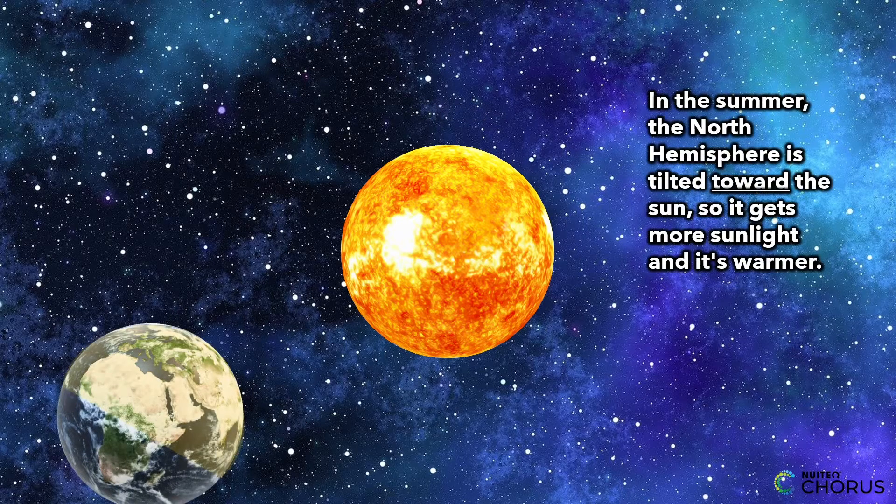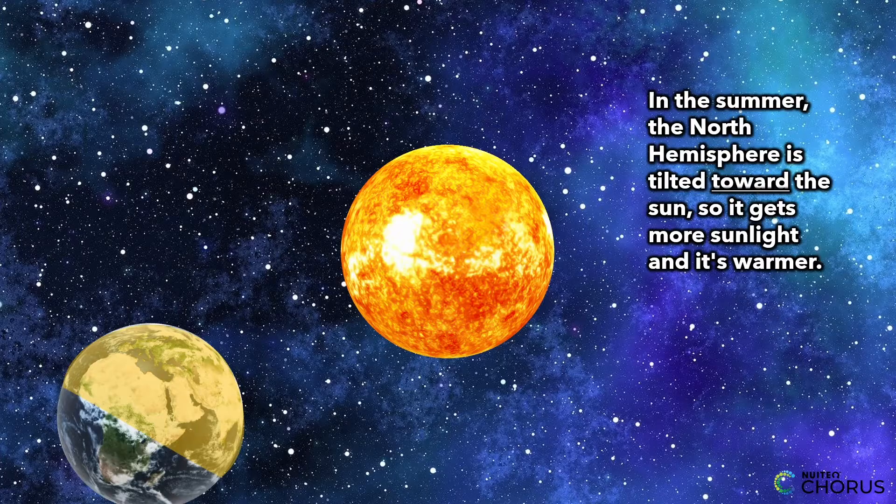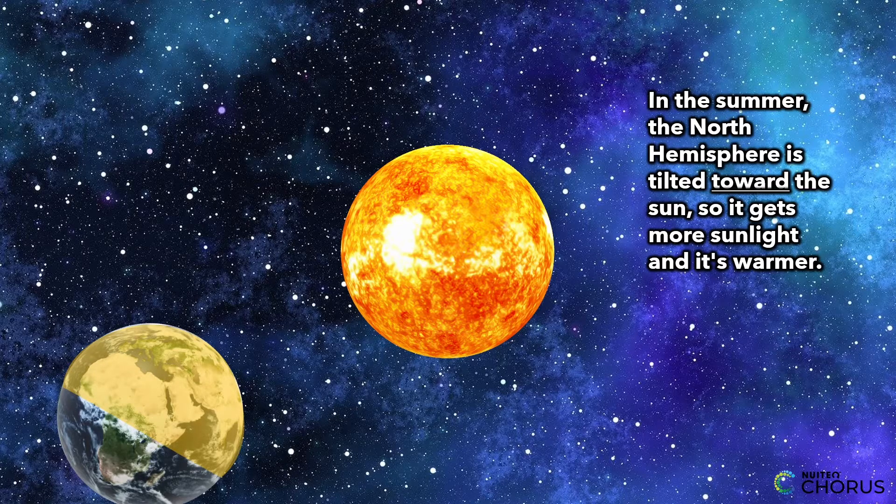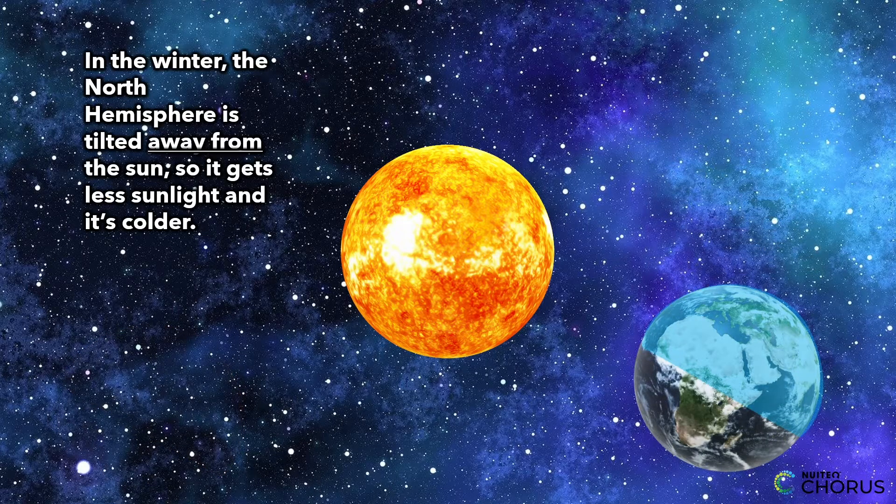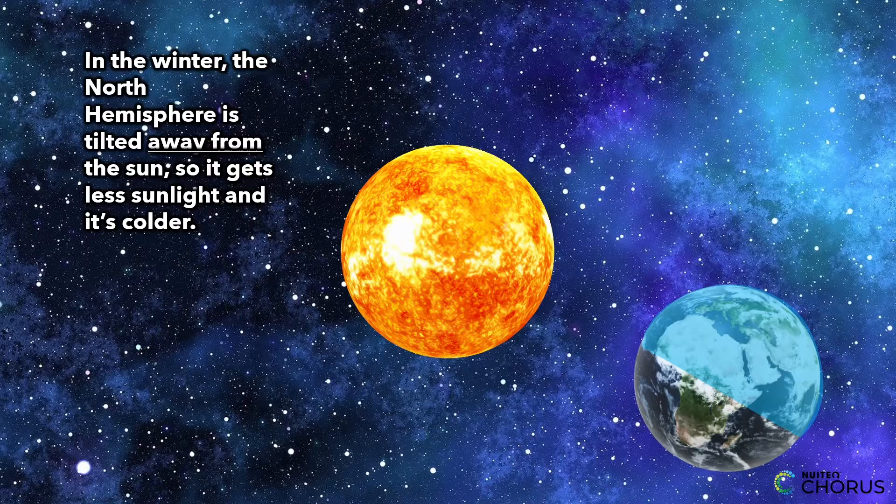This is why we have different seasons on Earth. In the summer, the North Hemisphere is tilted toward the Sun, so it gets more sunlight and it's warmer. In the winter, the North Hemisphere is tilted away from the Sun, so it gets less sunlight and it's colder.